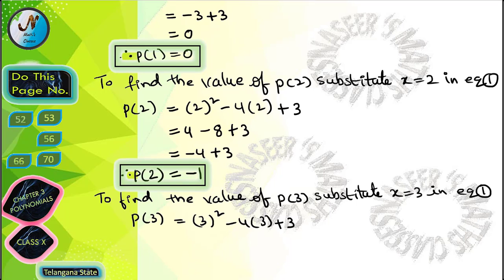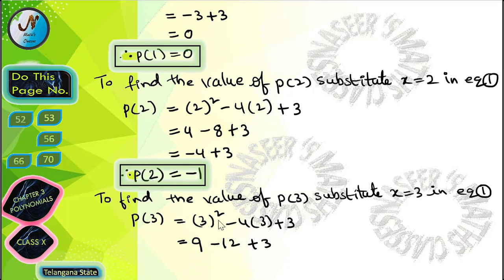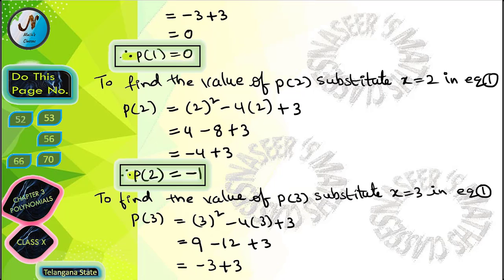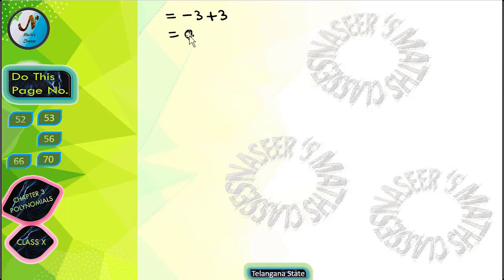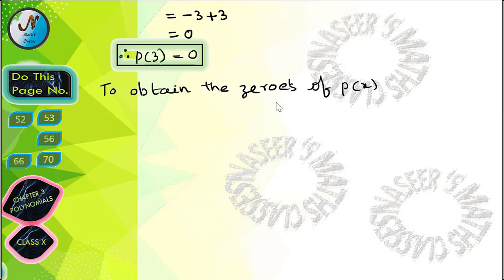To find the value of p(3), substitute x = 3 in equation 1. We get p(3) = 3² - 4(3) + 3. After simplification, 3² = 9 and 4 × 3 = 12, so we get 9 - 12 + 3. After subtracting, 9 - 12 = -3, and -3 + 3 = 0. Therefore p(3) = 0.